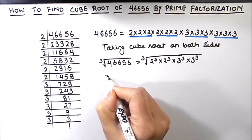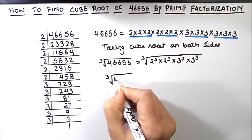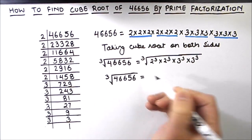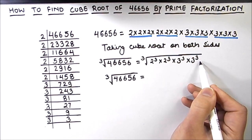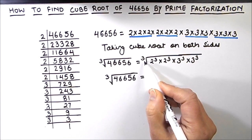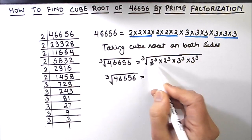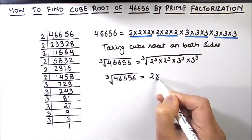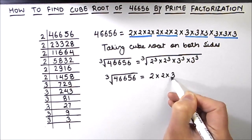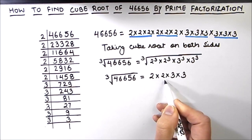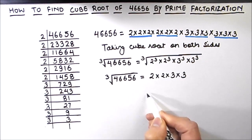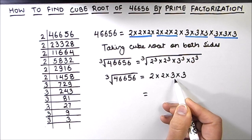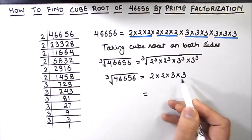On the left hand side we have the cube root of 46,656. Since all these numbers are perfect cubes under the cube root sign, and the cube root of a cubed number is the number itself, all these numbers come out of the cube root sign. We are left with 2 times 2 times 3 times 3. So 2 times 2 is 4, 4 times 3 is 12, and 12 times 3 is 36.